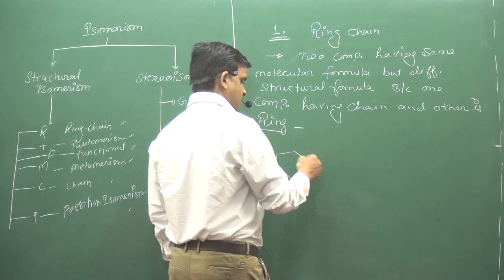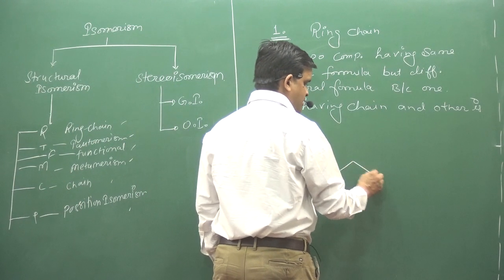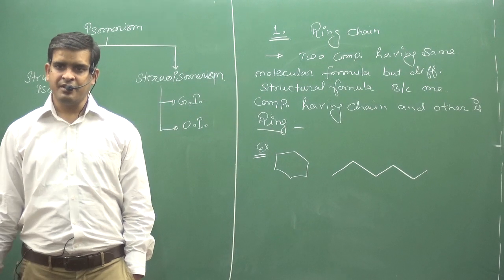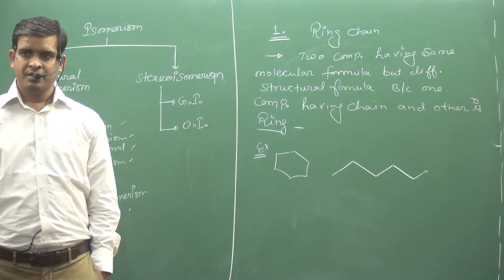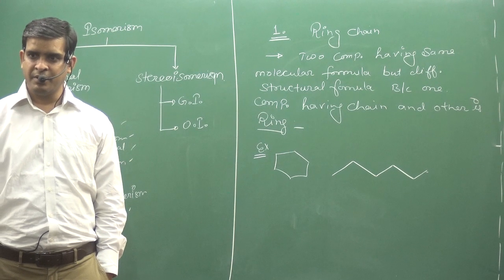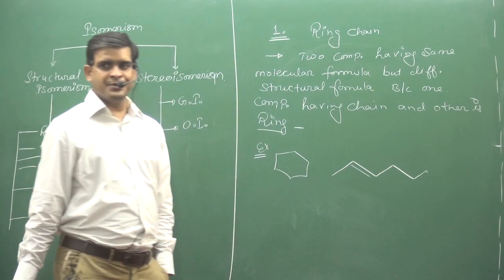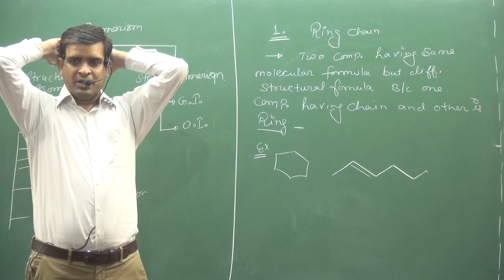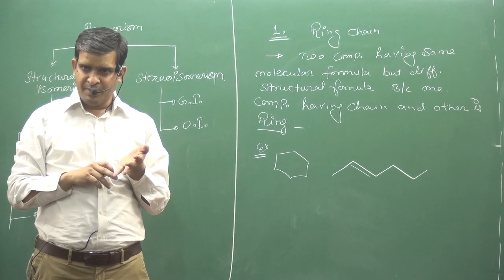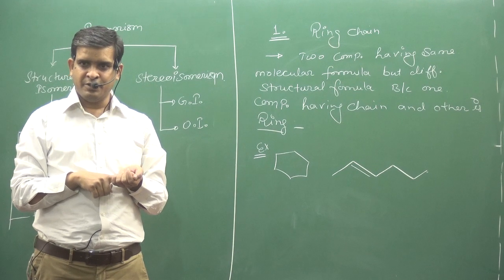Example. How many carbons? 6. 1, 2, 3, 4, 5, 6. So first, look at carbon atoms - same. D.O.U. same. And other atoms except carbon and hydrogen - same.